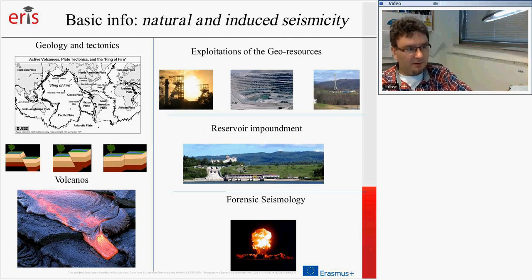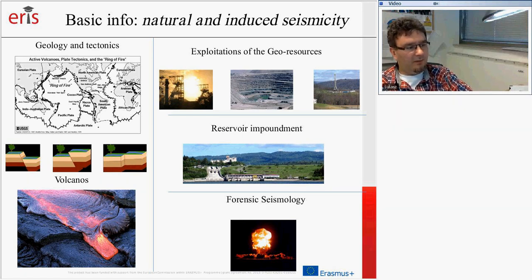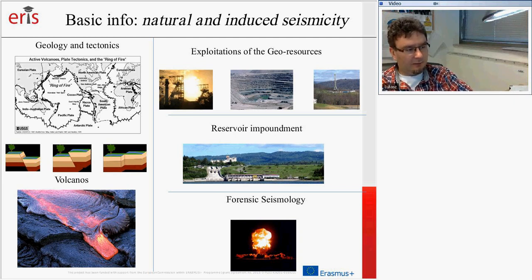Now let's go to seismicity. We can divide seismicity into at least two parts. The first is natural seismicity, which is connected, generally speaking, with geology and tectonics. Earthquakes usually occur on some kind of discontinuity in the crust called faults. We have at least three basic kinds of faults.